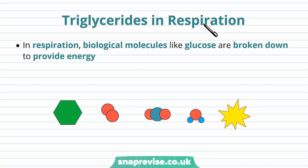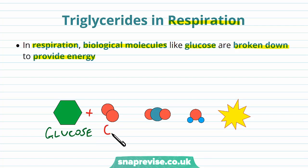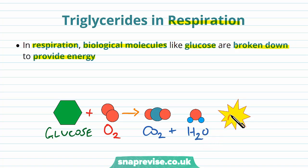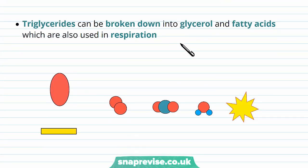Triglycerides have a range of functions, but one of their most important roles is that they can be used in respiration. Every cell in any organism needs to carry out respiration, where biological molecules like glucose get broken down to provide energy. The classical equation for respiration is that glucose reacts with oxygen to produce CO₂ and water as waste products, with the main useful product being ATP. We don't always need to use glucose — triglycerides can be broken down into their components, glycerol and fatty acids, which can also be used in respiration to produce ATP.